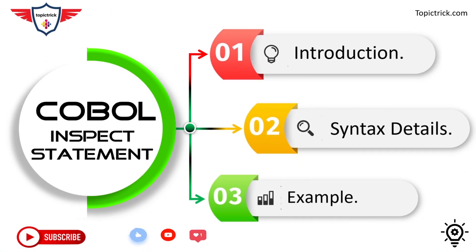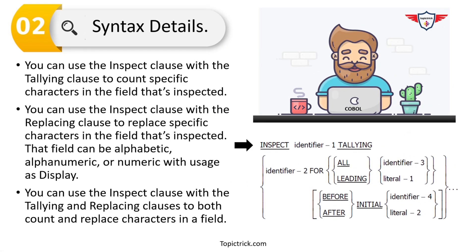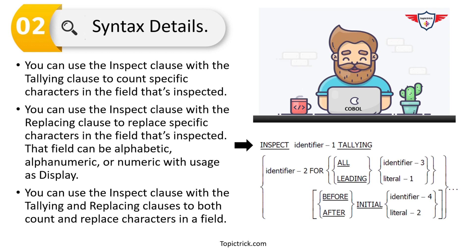Now let's move on to the detailed explanation of COBOL inspect syntax. The COBOL inspect statement is fairly simple and easy to understand. If you look at the right-hand side of the screen you'll find the simplified syntax. The inspect statement starts with the INSPECT keyword followed by identifier one, where you specify the variable holding the string you want to operate on.